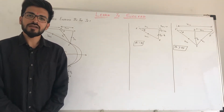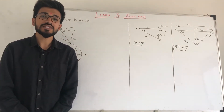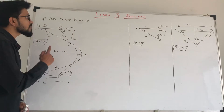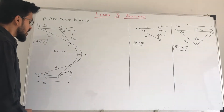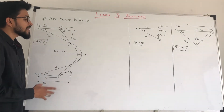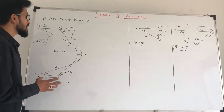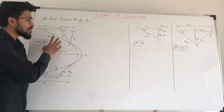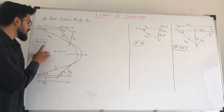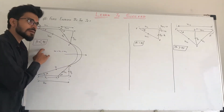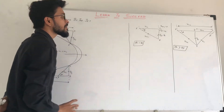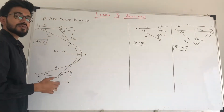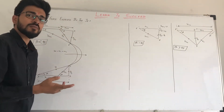Hello and welcome friends to my channel Learn to Succeed. Today we will learn how to derive the formula for force exerted by the jet. We have learned how to draw velocity triangles and we get three velocity triangles at the outlet: one when beta is less than 90, when beta is equal to 90, and when beta is greater than 90. We will see in all three cases what is the force exerted formula.